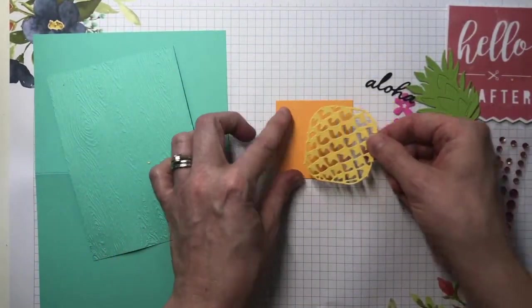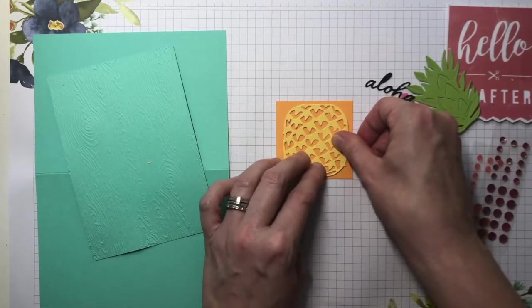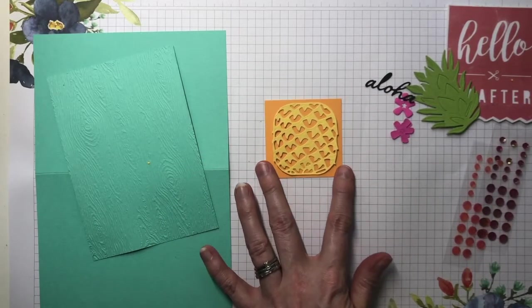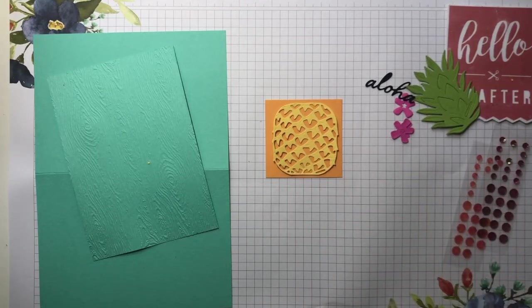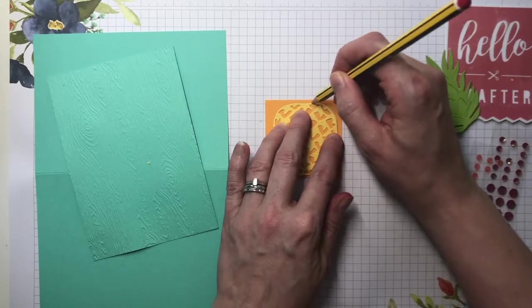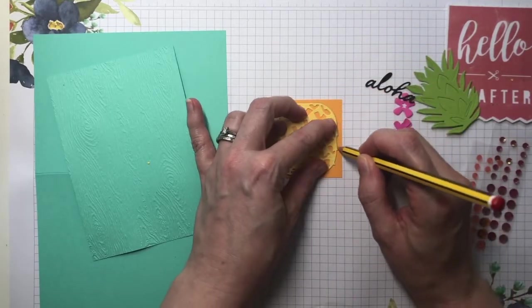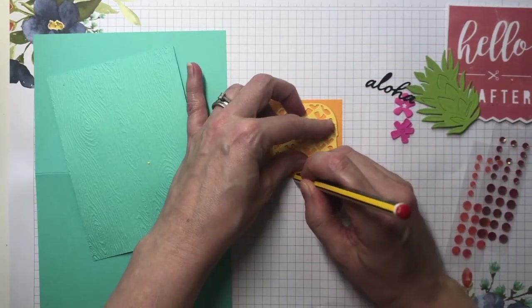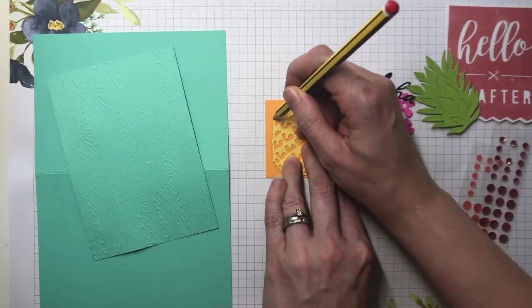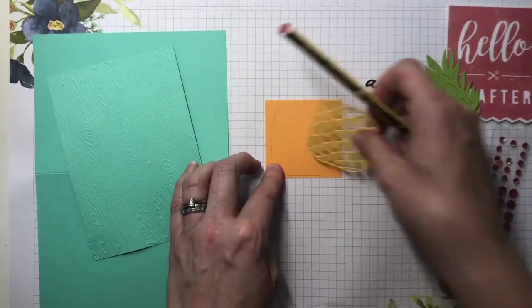And then just taking that shape, placing it over the Mango Melody square, just grab a pencil and just roughly draw around that pineapple shape. And then I'm going to cut that out.